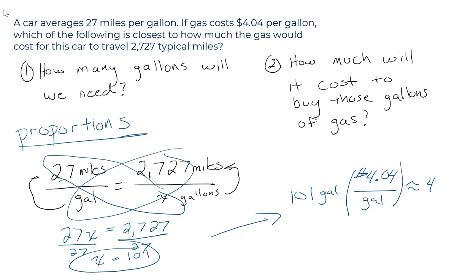101 gallons times $4.04 for every gallon is going to cost us, again, about $400, just a little bit more than that. We found the value of x by cross-multiplying.